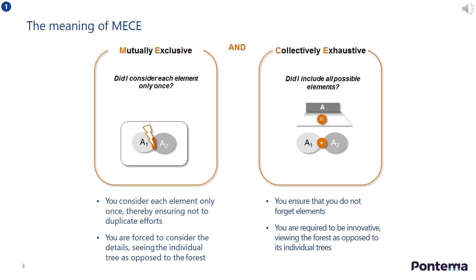Mutually exclusive means that any element can be placed into one and only one bucket, with no overlapping components. For example, groups of employees born in different years. The segmentation is mutually exclusive because an employee cannot belong to two different age groups. If you come up with an element that could potentially go into more than one bucket, your approach is not MECE. This way of organising information means you are forced to consider the details — in other words, seeing the individual tree as opposed to the forest.